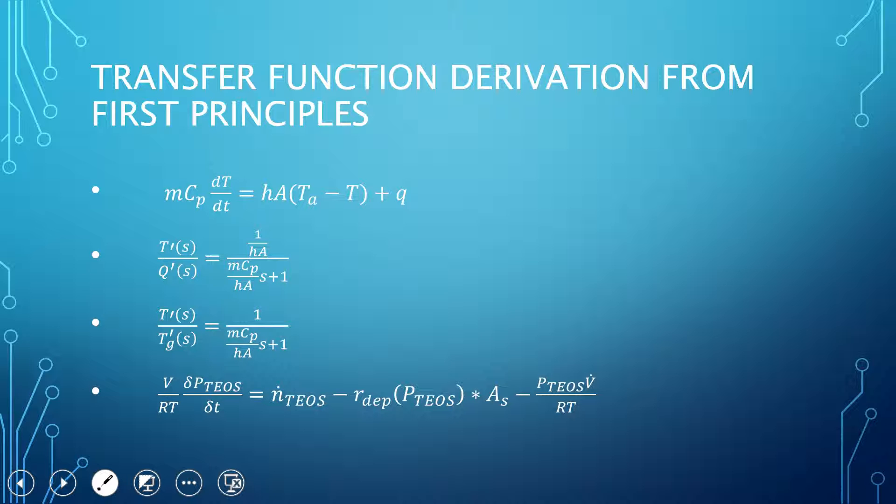Oh, these are just the equations. We have this first equation, that was our heat transfer, our energy balance, to derive some of the transfer functions in our first temperature model. We ended up getting these transfer functions from that. This was our material balance that we used primarily in our pressure model to come up with those transfer functions that we used there.